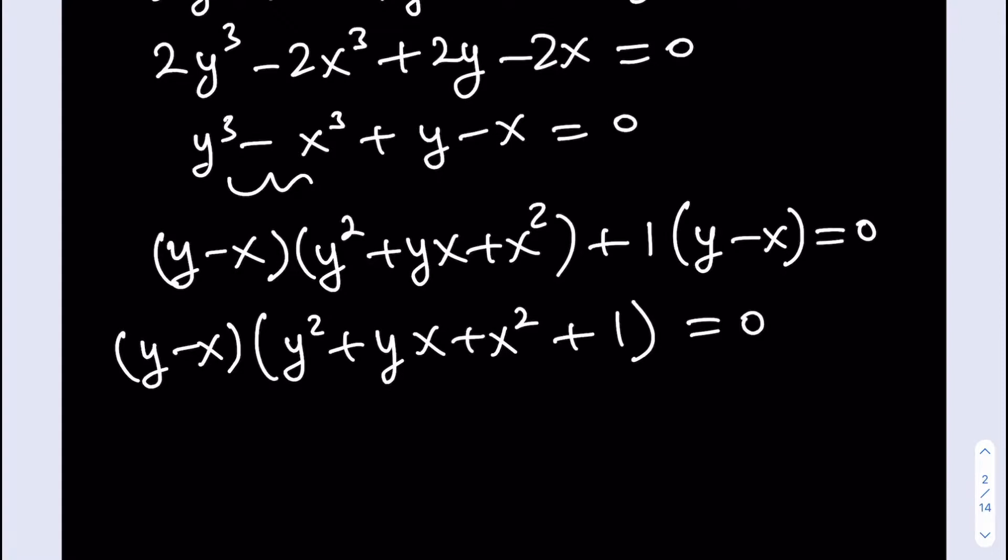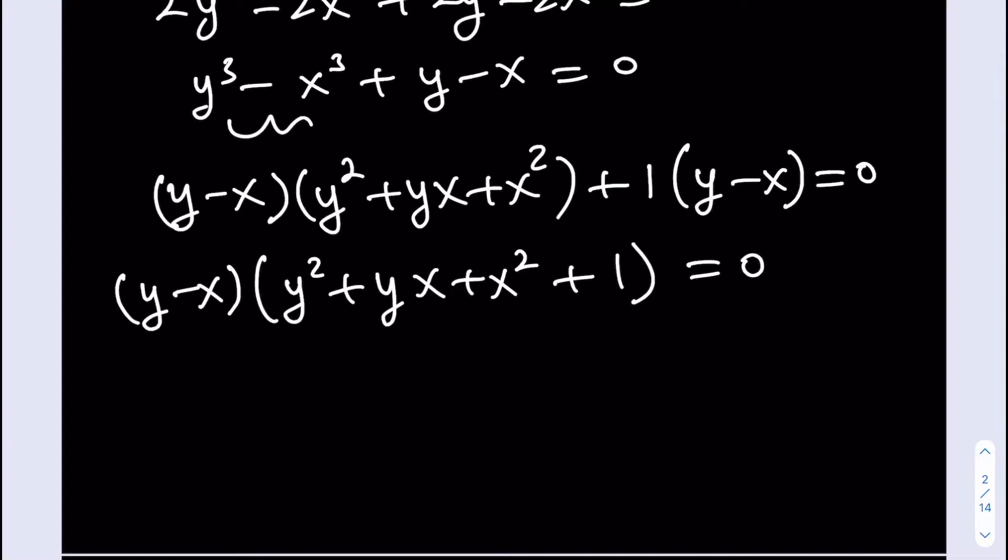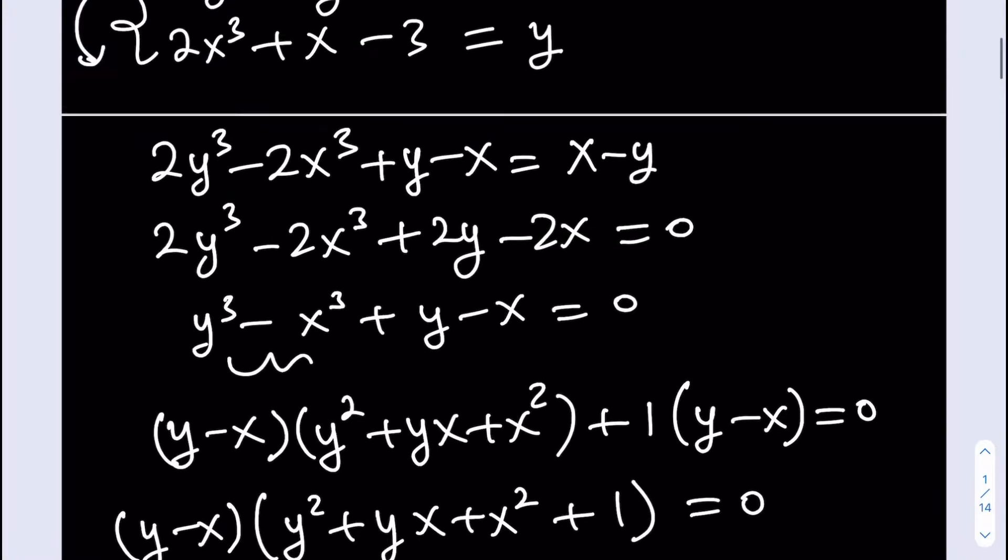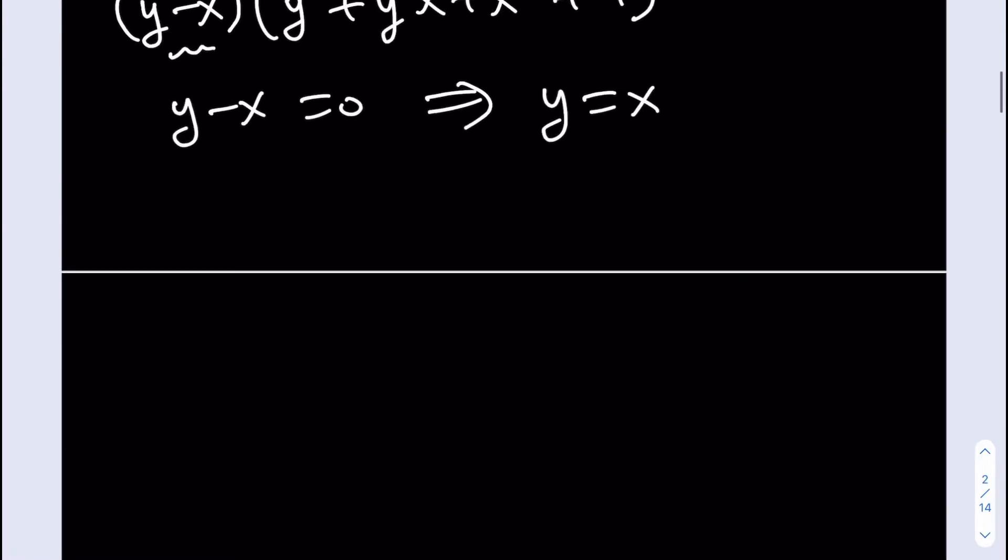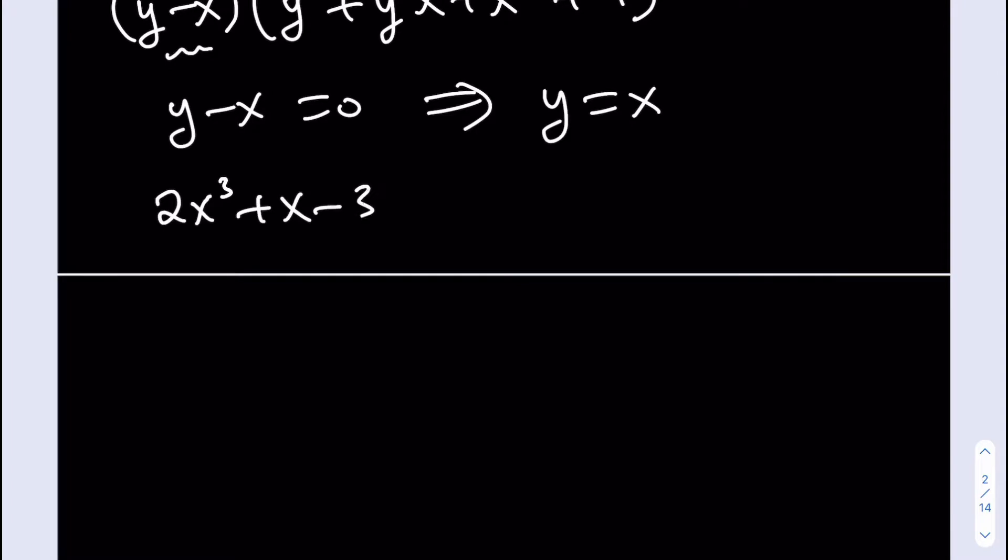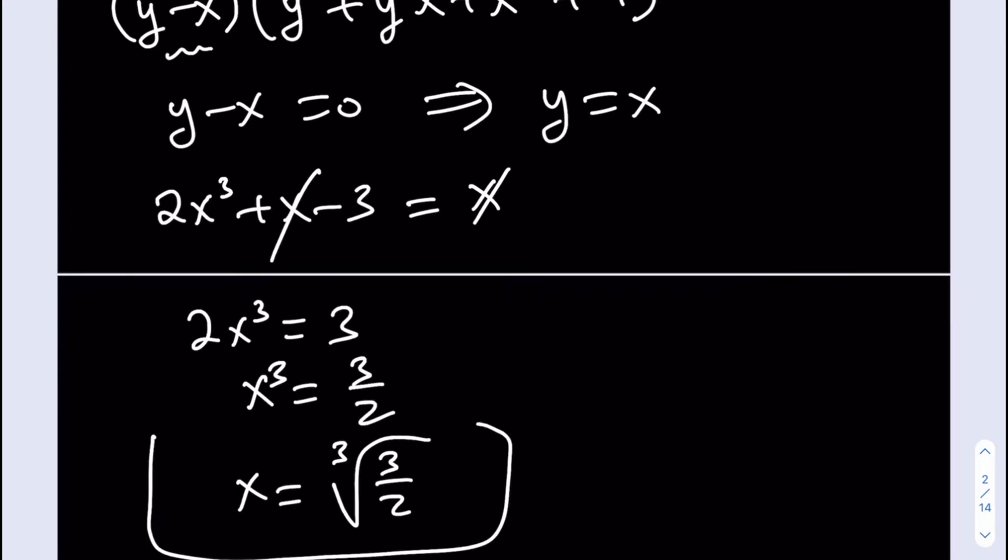At this point you might be saying, oh okay, I got it, right? But that's not the end of the story. So make sure to watch till the end, because that's very interesting. Obviously, from here we get that y=x. But what is y? Well, y is equal to 2x³+x-3. So 2x³+x-3=x, which is nice because the x cancels out. Then we get 2x³=3, and then x³=3/2. Then x equals the cube root of 3/2. This is one of the solutions, obviously.